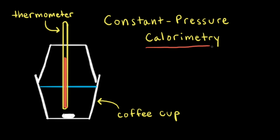Calorimetry refers to the measurement of heat flow, and a device used to measure heat flow is called a calorimeter. An easy way to make a calorimeter is to use two coffee cups. At the base we have one coffee cup, and we can use another coffee cup as a loose-fitting lid. Since this top coffee cup is loose-fitting, our calorimeter is exposed to the constant pressure of the atmosphere, so we can use this coffee cup calorimeter for constant pressure calorimetry.